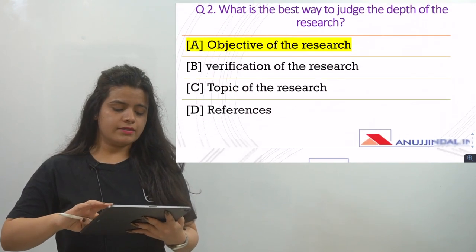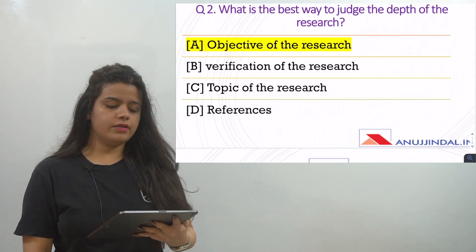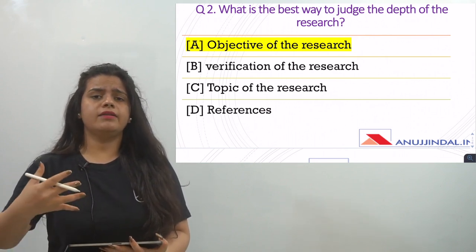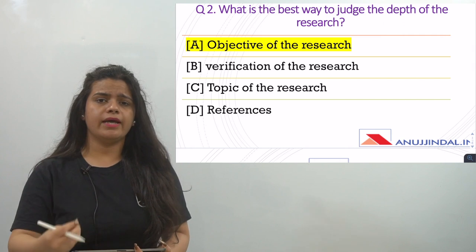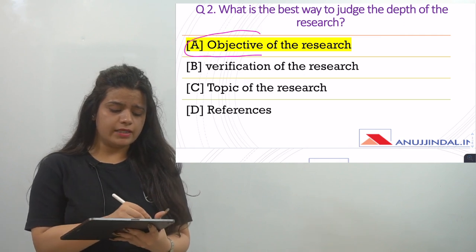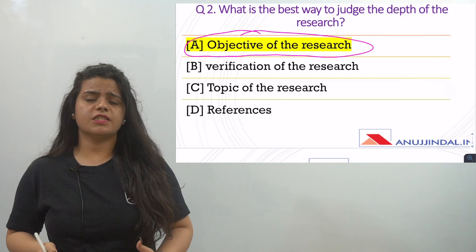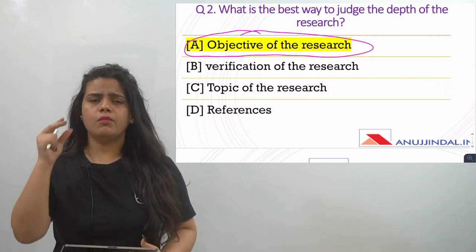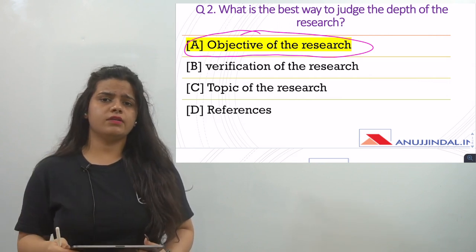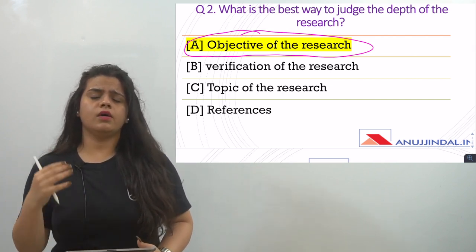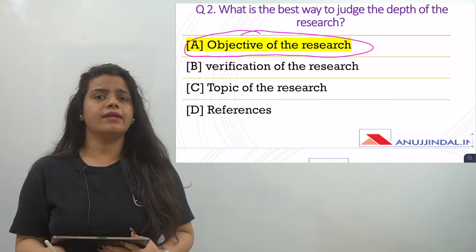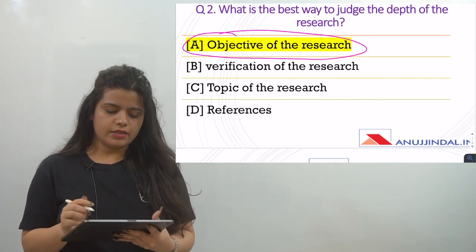The second question is: what is the best way to judge the depth of the research? This question is about how we determine how authentic, pure, and significant a research is — how well the work has been done. The answer relates to the objective of the research. When you look at any research, the most important thing is understanding what the research is trying to achieve — its aim. Verification, topic, and references are also important factors.